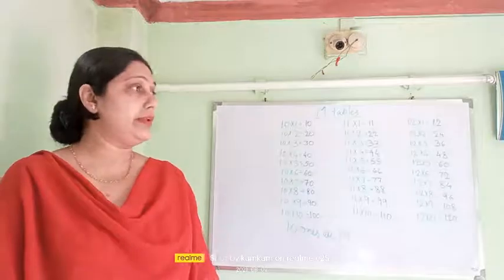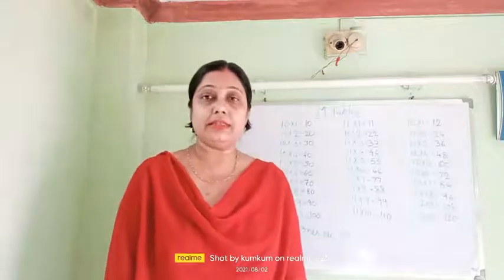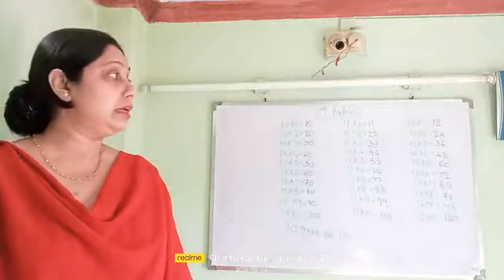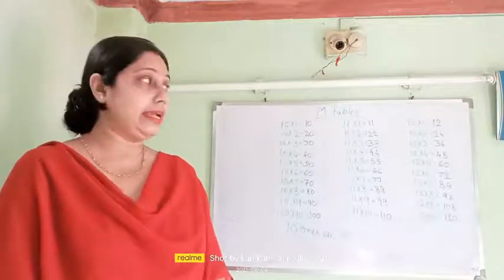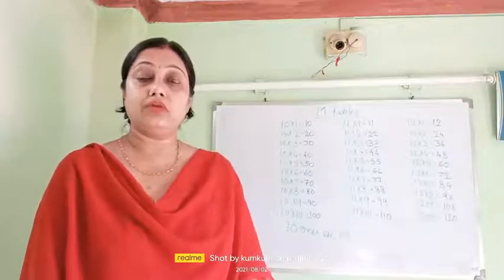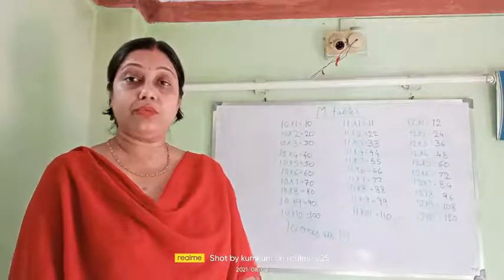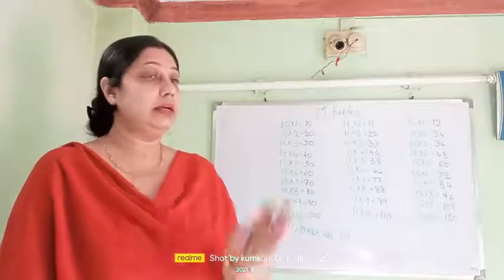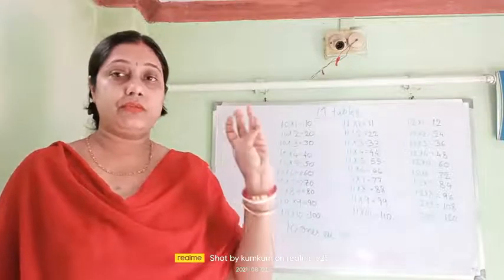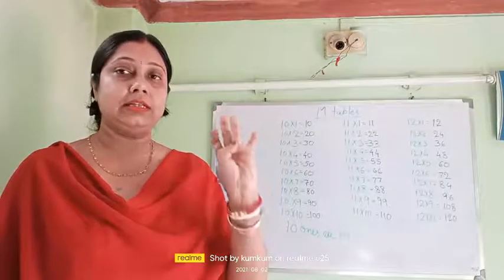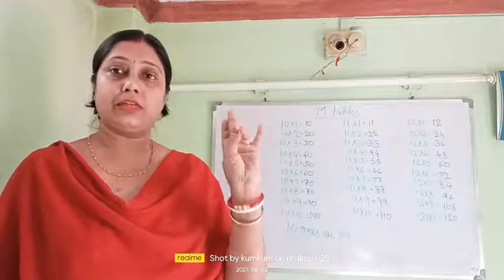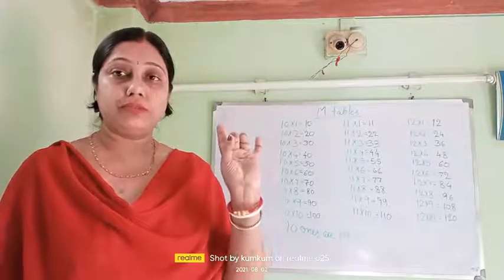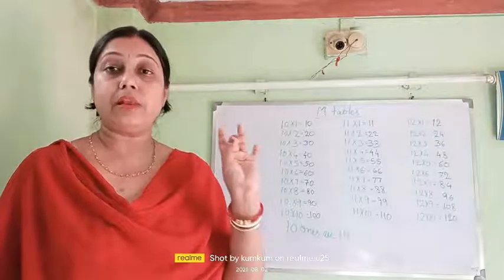When we read the table of 12, here also there is a gap of 12 numbers between two results. See: 12 ones are 12 and 12 twos are 24. So after 12, 24 is coming. If you count from 12: 13, 14, 15, 16, 17, 18, 19, 20, 21, 22, 23, 24 — that is a gap of 12 numbers. So if you are forgetting, you can immediately count up and write down the next number.